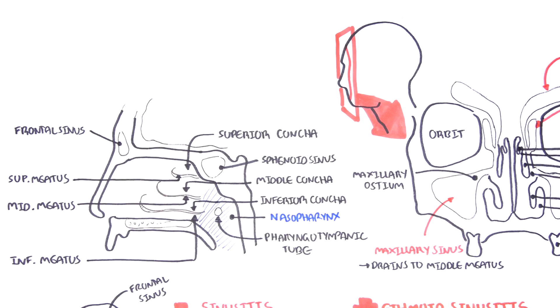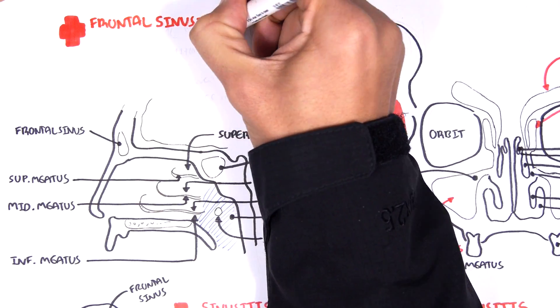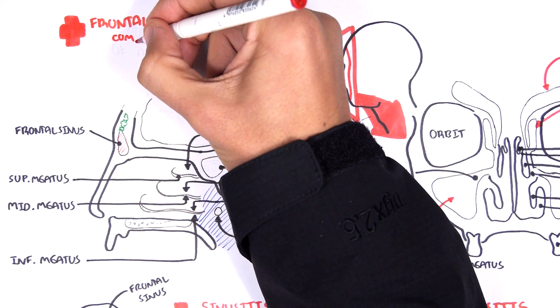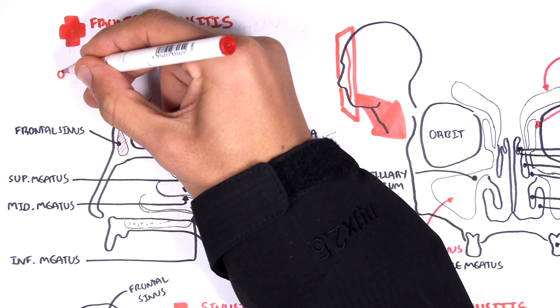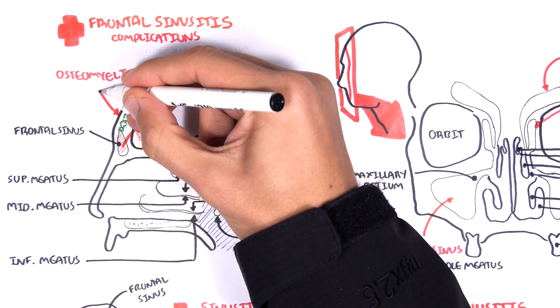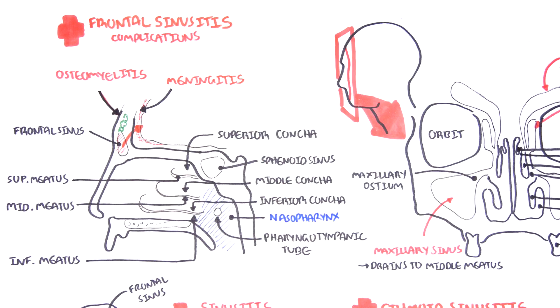Similarly, frontal sinusitis can also cause some complications, but it can cause osteomyelitis. For the frontal sinus, if you have infection here, the infection may or can invade the brain, causing meningitis and even form an abscess in absolutely worst case scenarios. Of course, these complications are rare, but it is good to know them nonetheless.